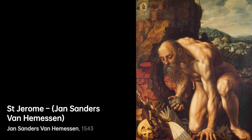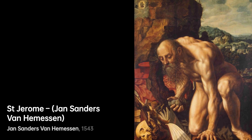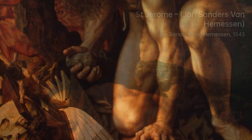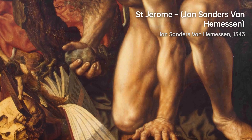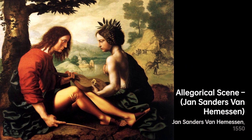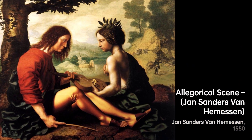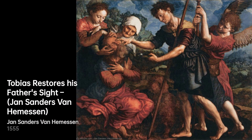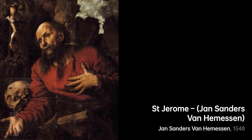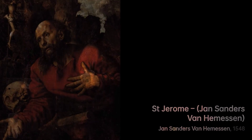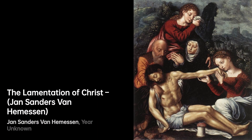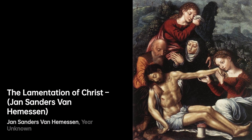Jan Sanders Van Hemessen, born in Hemexem, was an apprentice of Hendrik van Cleve I in Antwerp. In the early 1520s, he traveled to Italy, where he studied classical antiquity models like the Laocoon and the works of Michelangelo and Raphael. Returning to Antwerp in 1524, he became a master in the local Guild of St. Luke.